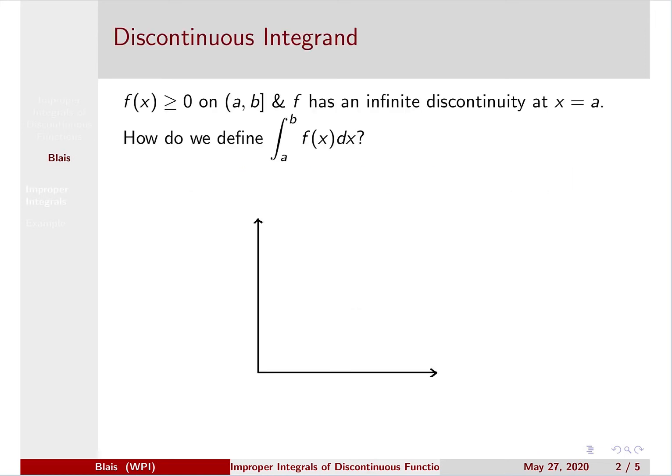In this type of integral, we're looking at a non-negative function on the interval (a, b). We're leaving the left endpoint off of the domain, where f has an infinite discontinuity at x equals a. So think of having something that looks like this, something like a vertical asymptote at x equals a.